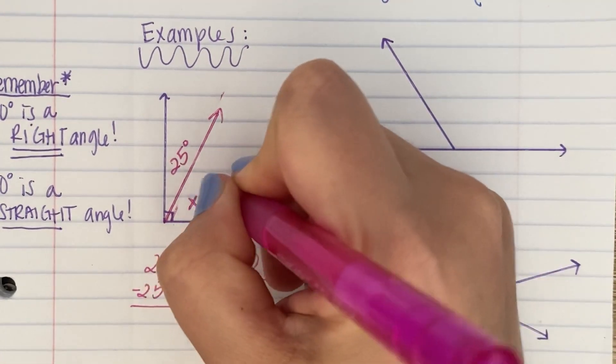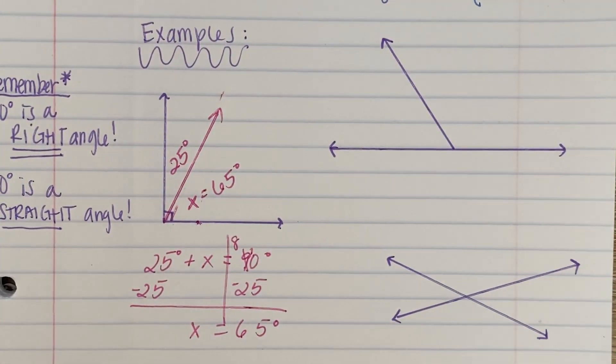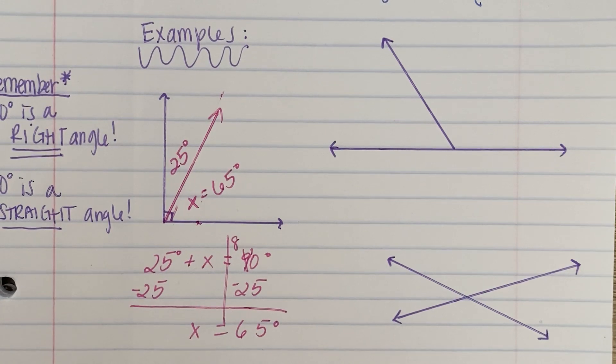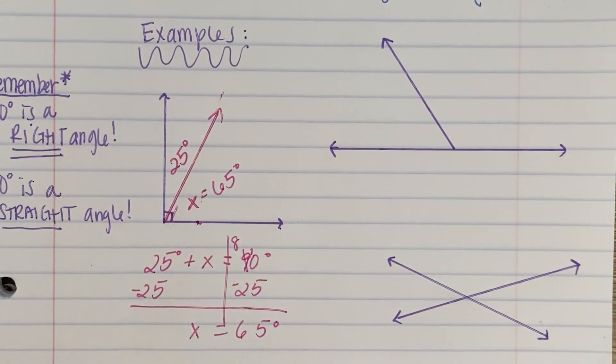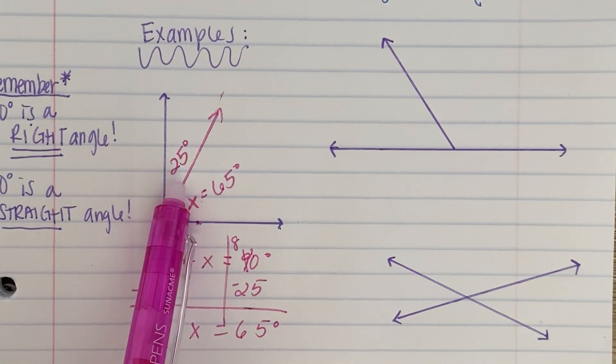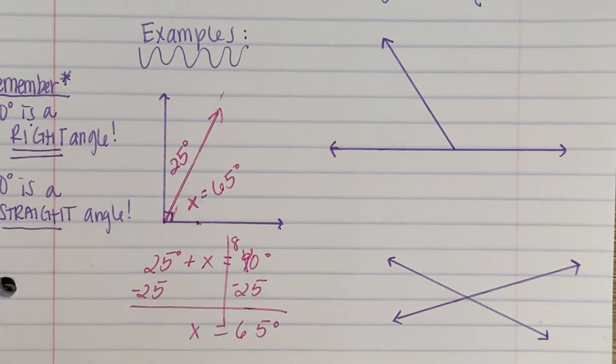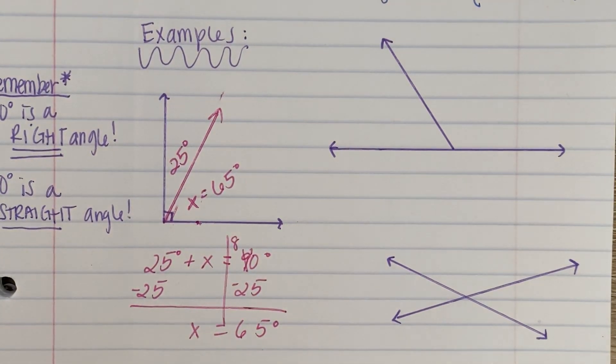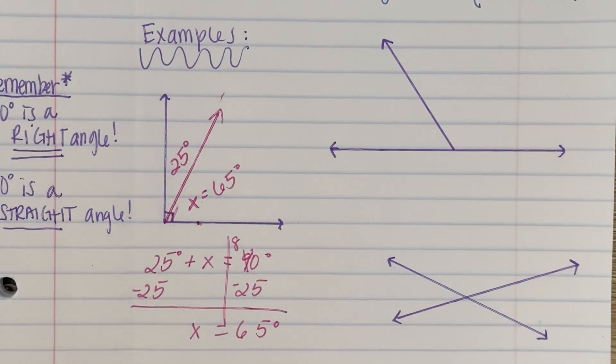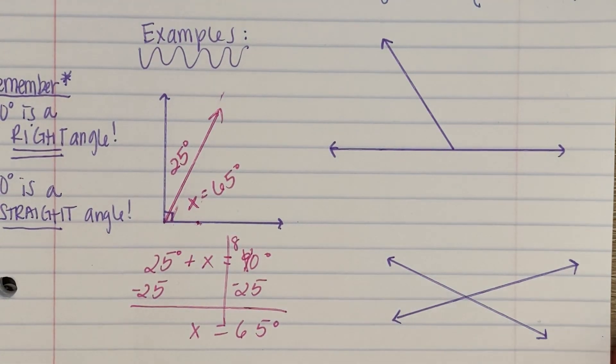So X is equal to 65 degrees. Now you're like, Ms. Z, you just did so much work and there was an easier way to do this. Well, you're right. If you know that these two angles added up together equals 90 degrees and you know that this angle is 25 degrees, all you have to do is subtract 25 from 90 and you also get 65 degrees. That is definitely a little trick, a little shortcut. So let's go ahead and do the next example.